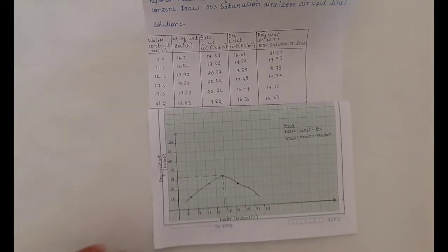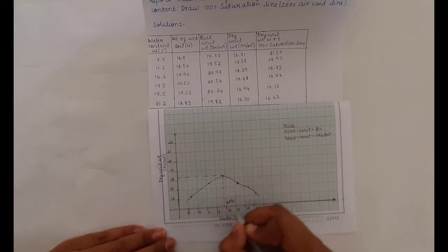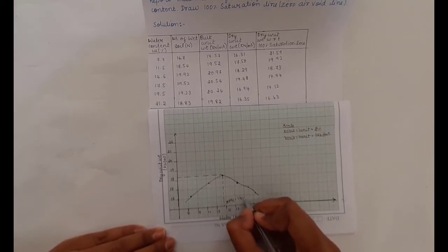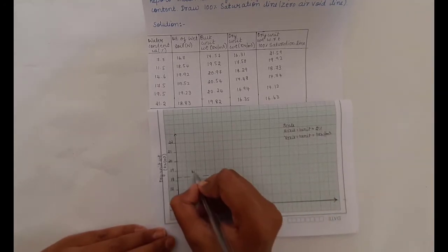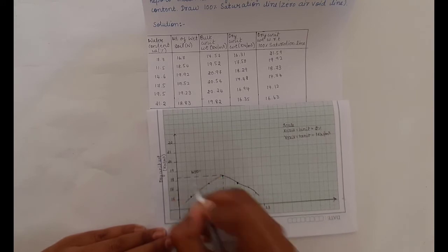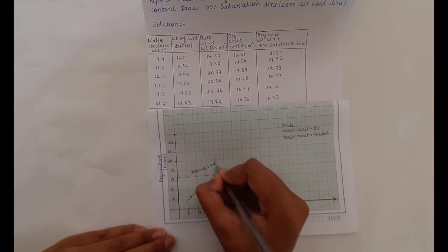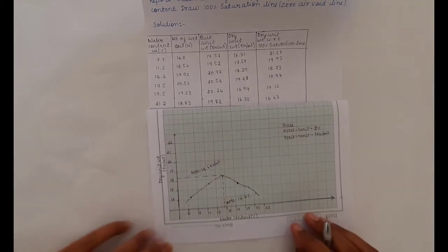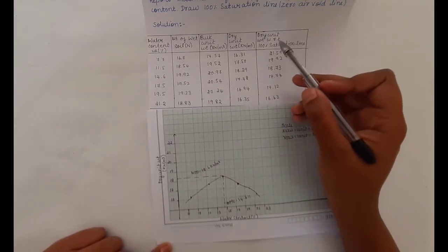From the peak point of the compaction curve, draw a vertical line and a horizontal line to find OMC and MDD. The OMC here is equal to 14.6% and the MDD is equal to 18.6 kN/m³.